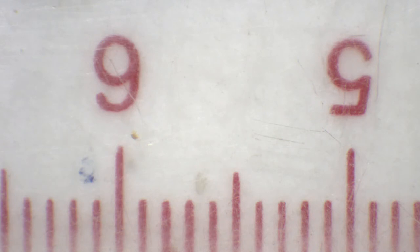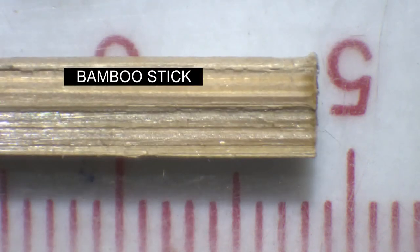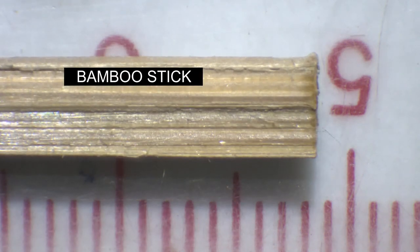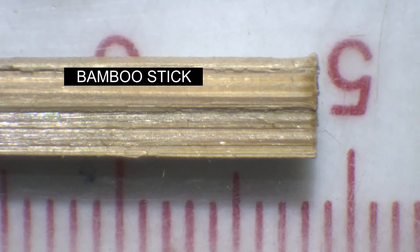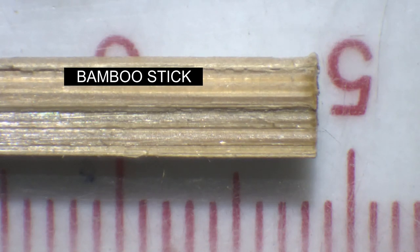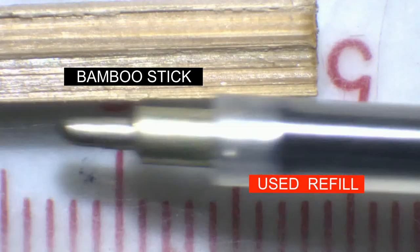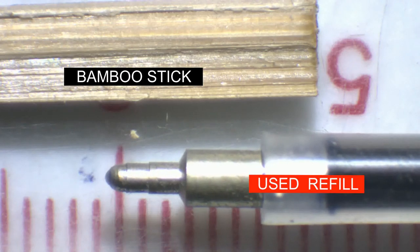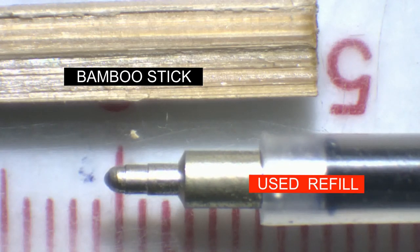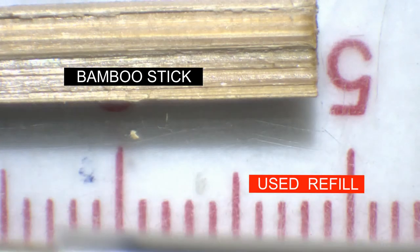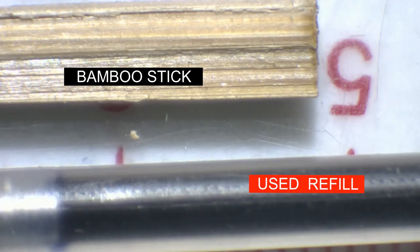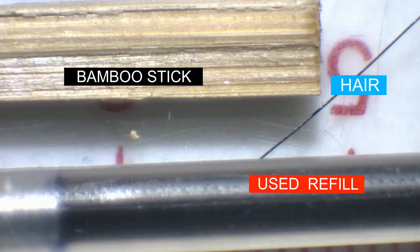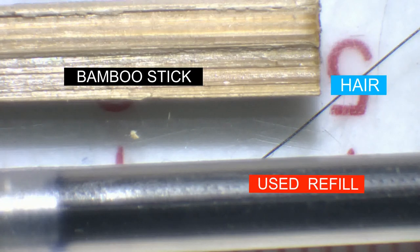This is a bamboo stick which will be used for making the cart. The next thing is a used refill that will be used for making the wheels. The third thing is hair, which will be used for holding the bullock that will be pulling the cart.